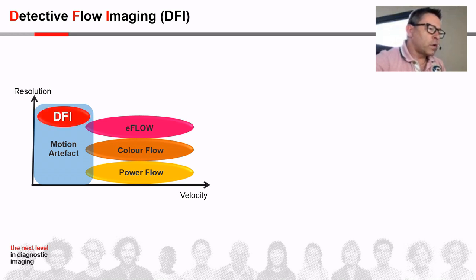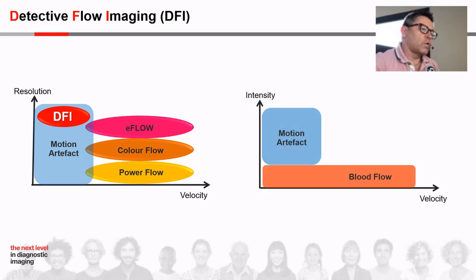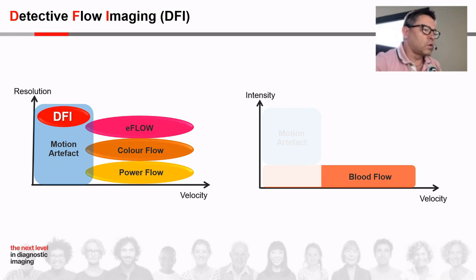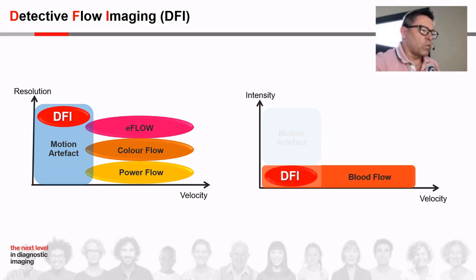The DFI algorithm also works on the part of the signal containing motion artifacts. In the second graph, the flow velocity is compared to the intensity of the signal. In daily use, artifacts are cut by filters, but these filters also cut very slow flow, which is a useful signal to understand if a structure is vascularized or not.